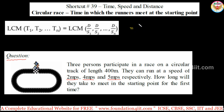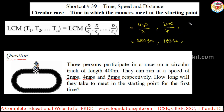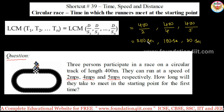First person: distance is 400 meters divided by speed 2 meters per second, so it takes 200 seconds. Second person: 400 meters divided by 4 meters per second, so it takes 100 seconds to complete one circle. Third person: 400 meters divided by 5 meters per second, so that is 80 seconds.